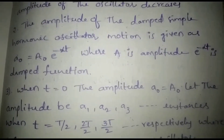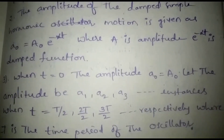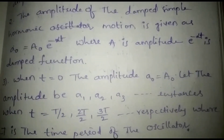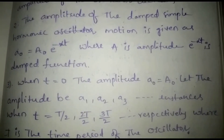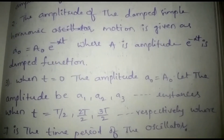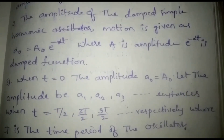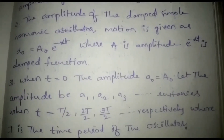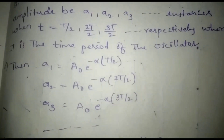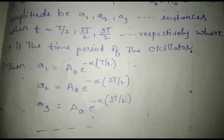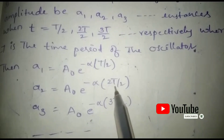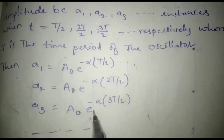If the time is 0, we can write amplitude A₀ equal to capital A₀. We can write the first amplitude A₁ equal to A₀ e^(−αT/2), A₂ equal to A₀ e^(−α·2T/2), A₃ equal to A₀ e^(−α·3T/2), and so on, where T is the time period.